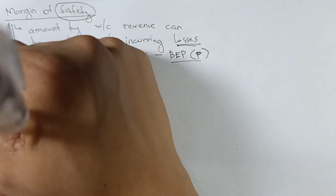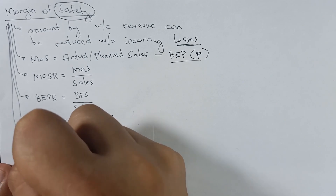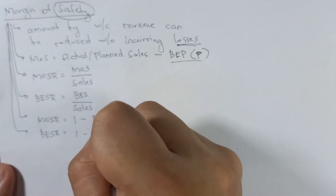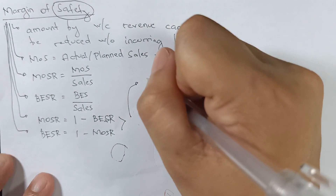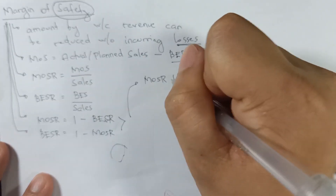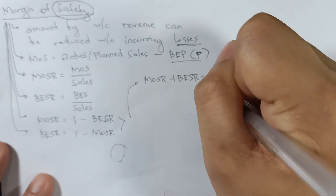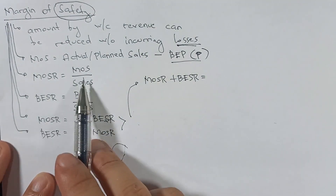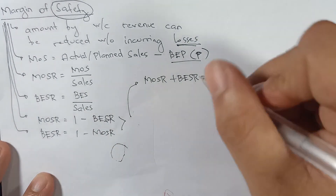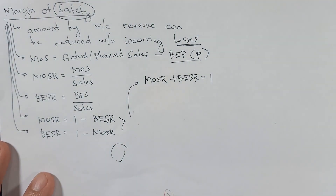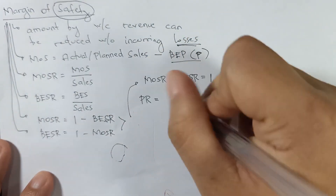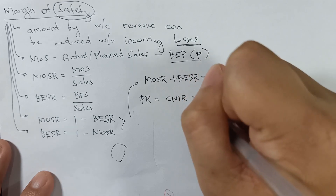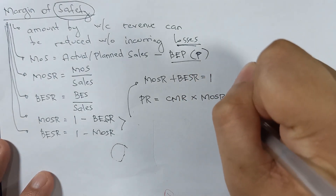Conversely, the break-even sales ratio equals one minus the margin of safety ratio. When you add the margin of safety ratio and the break-even sales ratio — since they share the same denominator — you get 100%. One last thing: the profit ratio equals the contribution margin ratio times the margin of safety ratio.